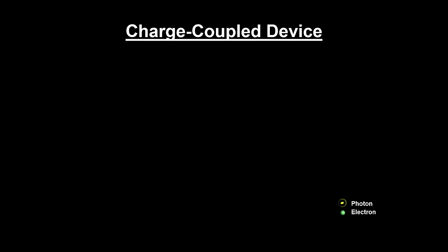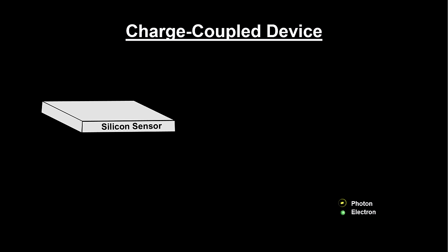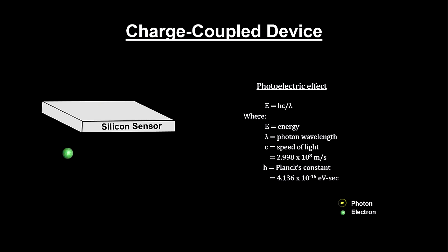CCDs are based on a principle called the photoelectric effect. If a photon with sufficient energy hits an electron in the outer shell of an atom, the transfer of energy to the electron can be enough to free it from the atom altogether.